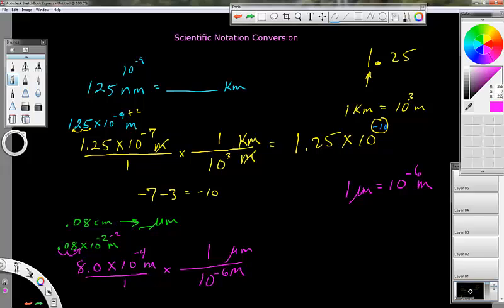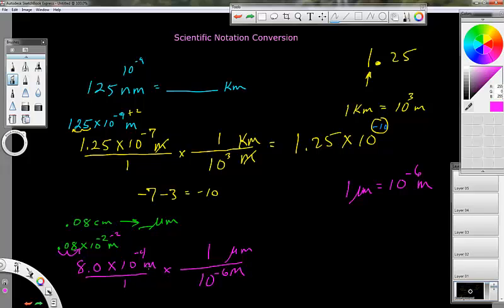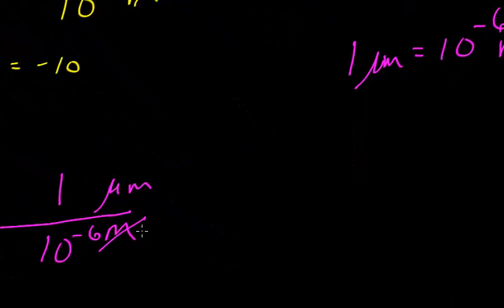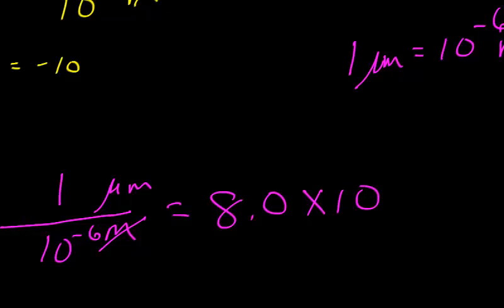You convert it to the base unit first, and then this becomes infinitely easier. That cancels, so this is going to become 8.0 times 10 to the negative 4 minus negative 6 power, which would be 2, positive 2. So it's 8.0 times 10 to the second, or we know this is 800 micrometers.